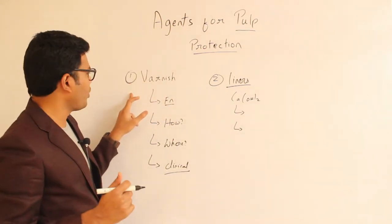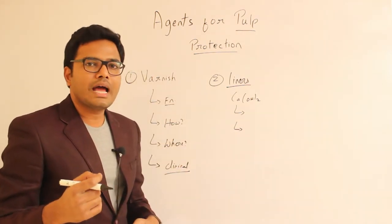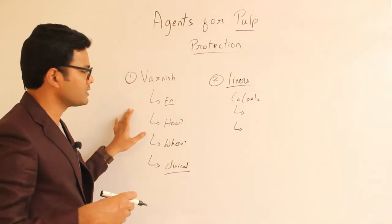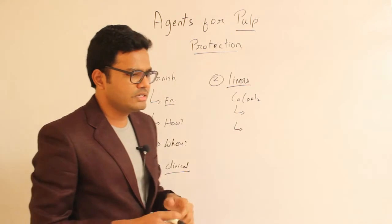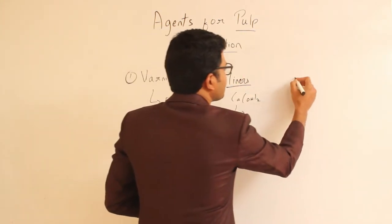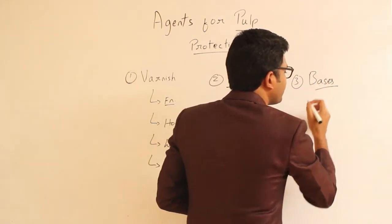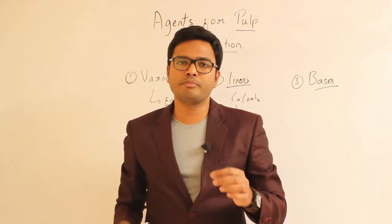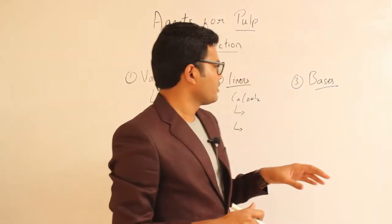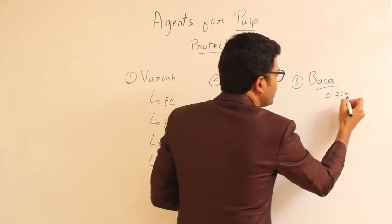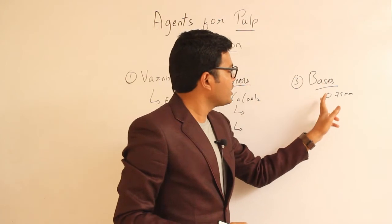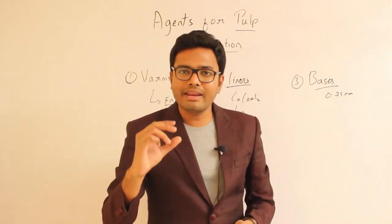While discussing varnish, another material can be used as a substitute — that's nothing but a bonding agent. Research has proved that usage of a bonding agent also has the same purpose; dentin bonding agents carry the same role as varnish in sealing dentinal tubules. Apart from varnish and liners, we have the third material — base. The minimum thickness of a base has to be 0.75 mm, and its function is to restore the lost tooth structure, especially the dentin, as well as to provide proper mechanical support to the overlying restoration.